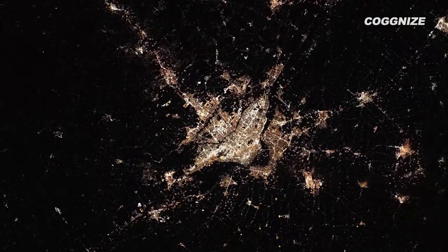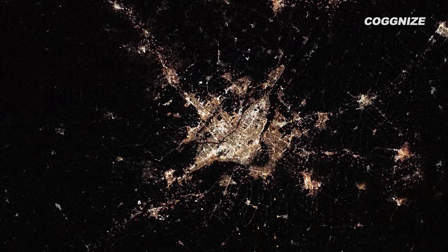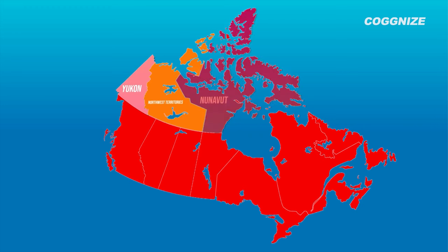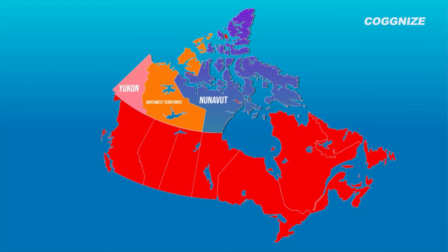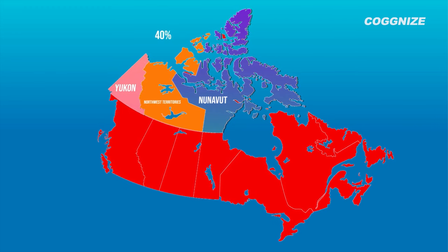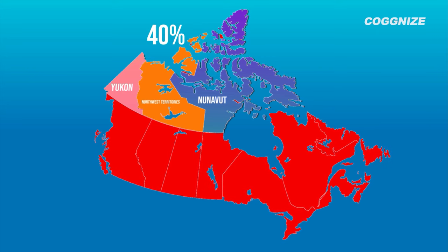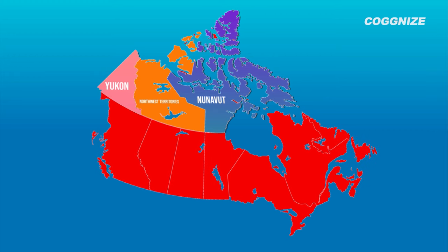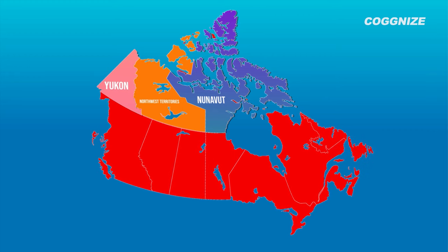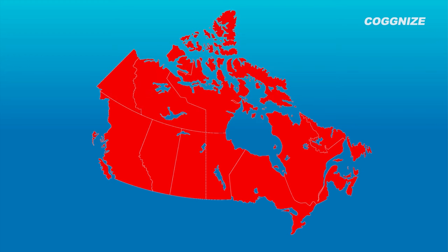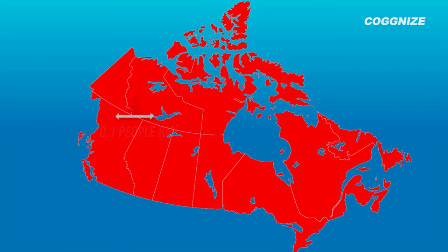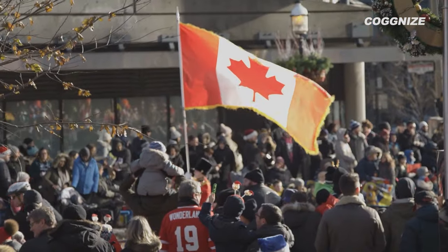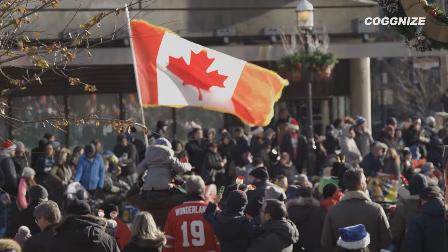Canada's vast land mass is divided into 10 provinces and 3 territories. The three territories — Yukon, Northwest Territories and Nunavut — make up a significant portion of Canada's land area, accounting for 40% of the total. However, they are home to only 3% of Canada's population, with an average population density of just 0.1 people per square kilometre. The remaining 60% of Canada's population is spread across the 10 provinces.